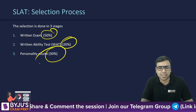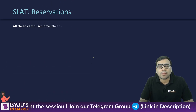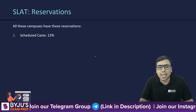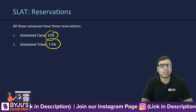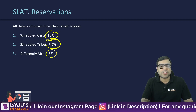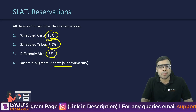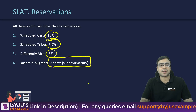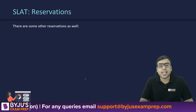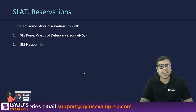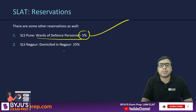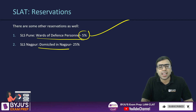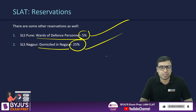All campuses have reservations: 15% for Scheduled Caste, 7.5% for Scheduled Tribe, 3% for differently abled, and two seats for Kashmiri migrants. Additionally, SLS Pune has 5% reservation for wards of defense personnel, and SLS Nagpur has 25% reservation for Nagpur domicile candidates.